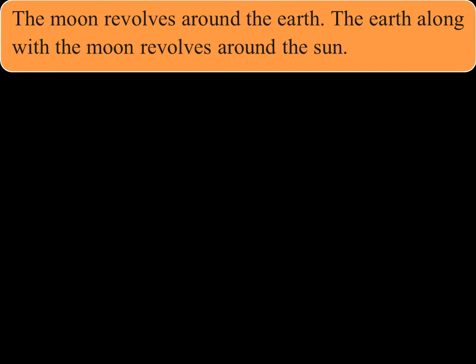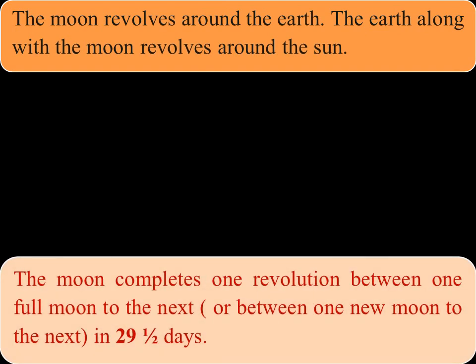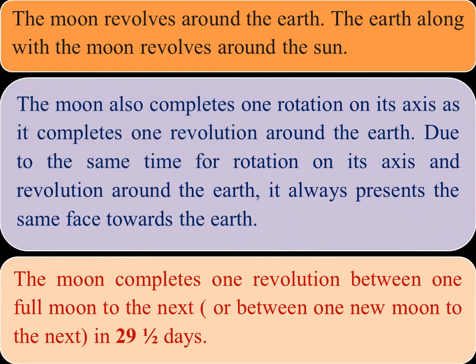The earth along with the moon revolves around the sun. The moon completes one revolution between one full moon to the next full moon, or between one new moon to the next new moon, in nearly 29 and a half days. The moon also completes one rotation on its axis as it completes one revolution around the earth. Due to this, it always presents the same face towards the earth. That means we are always seeing the same side of the moon from earth, and we will never see the back side of the moon from the earth.